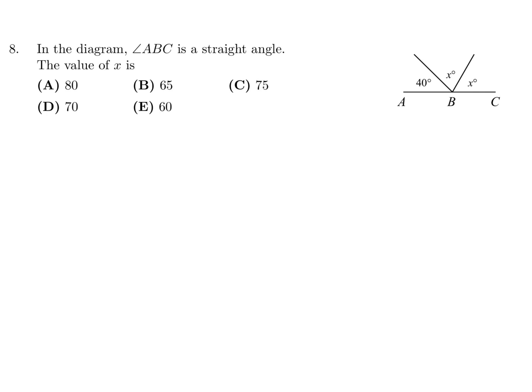In the diagram, angle ABC is a straight line, the value of X is. So if it's a straight line, that means all those angles, all the way around, would equal 180. So 40 plus X plus X is 180. So therefore, 2X is equal to 180 minus 40, which is 140. And therefore, X would be 140 divided by 2, which is 70. Number 8, therefore, is D.